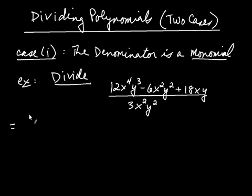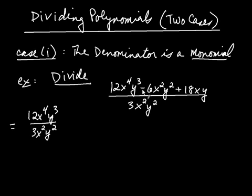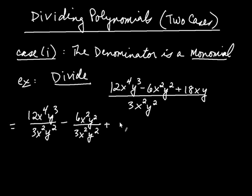So we get 12x to the fourth y cubed over 3x squared y squared, and the next one is going to be minus 6x squared y squared over 3x squared y squared, and then finally plus 18xy divided by that denominator, 3x squared y squared. So they all individually get divided by that single denominator.